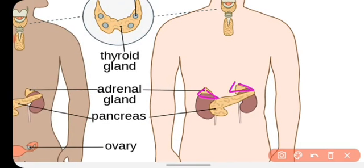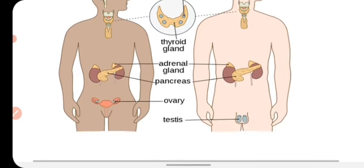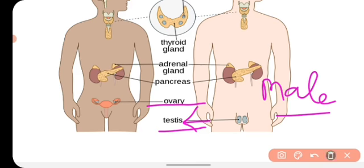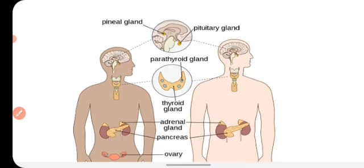In females, the ovary is a reproductive organ that also behaves like an endocrine gland and secretes female sex hormones. In males, the testis is a reproductive organ that also functions as an endocrine gland and secretes the male sex hormone testosterone. These are the main endocrine glands found in our body.